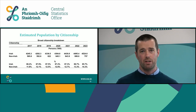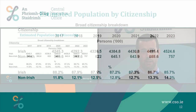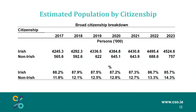The estimated population is also broken down by citizenship, shown in a table covering 2017 to 2023, with Irish and non-Irish citizens separated out. Just above 88 percent of the population were Irish citizens in 2017, and this has steadily declined to 85.7 percent in 2023.